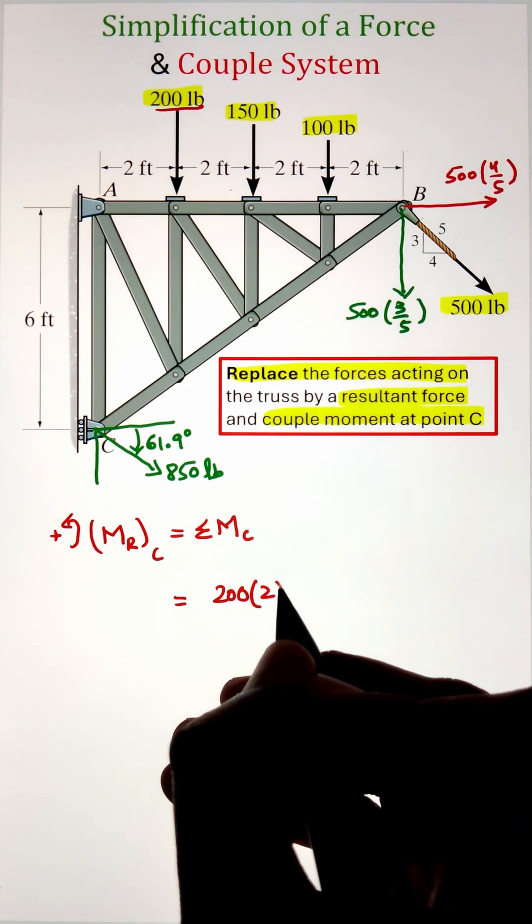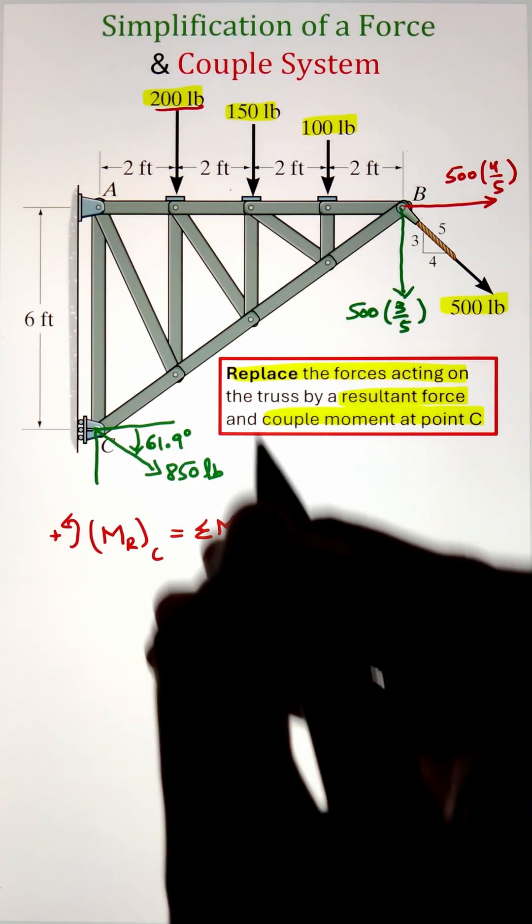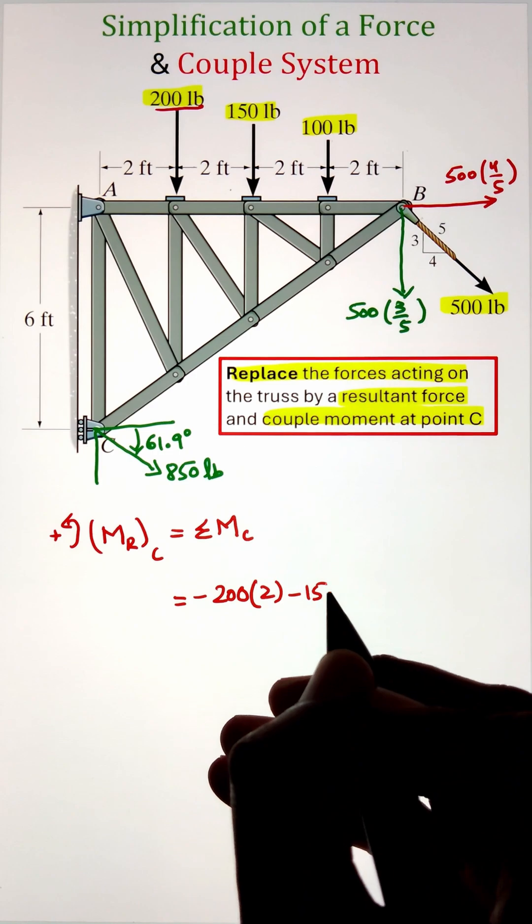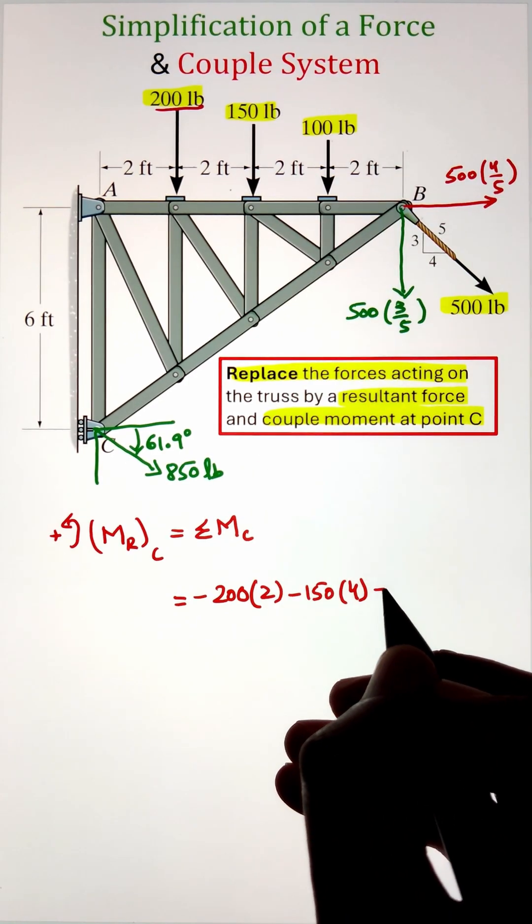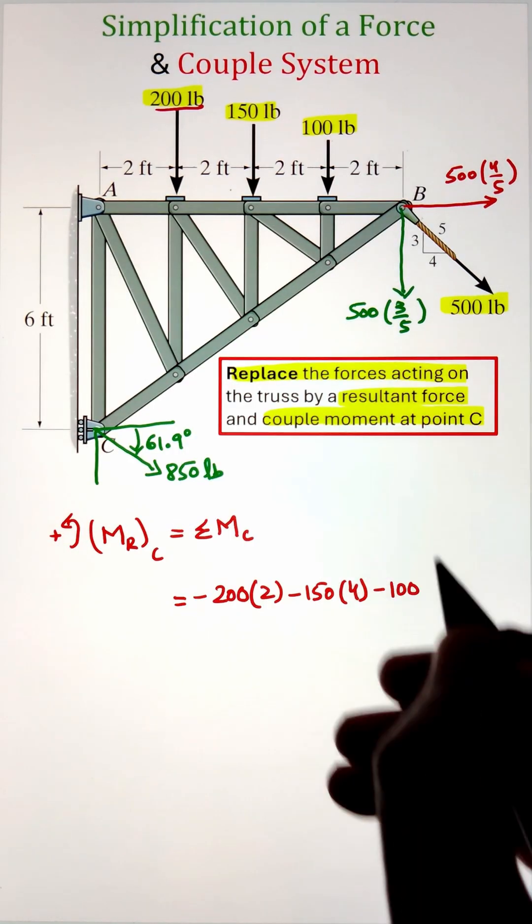We can start with our 200 pound force acting downward and have a moment arm of two feet. This force is going to create a clockwise moment as the moment arm is towards the left of the force.